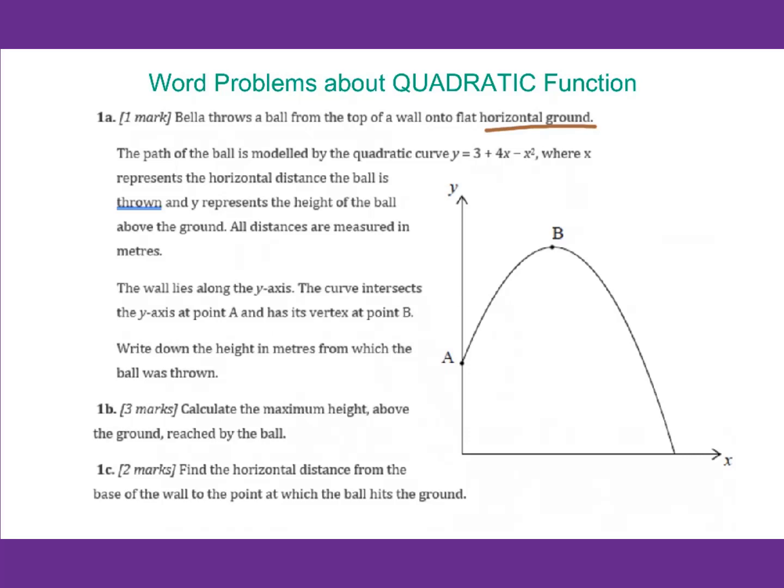The path of the ball is modeled by the quadratic function y equals 3 plus 4x minus x squared, where x represents the horizontal distance the ball is thrown, and y represents the height of the ball above the ground. All distances are measured in meters.